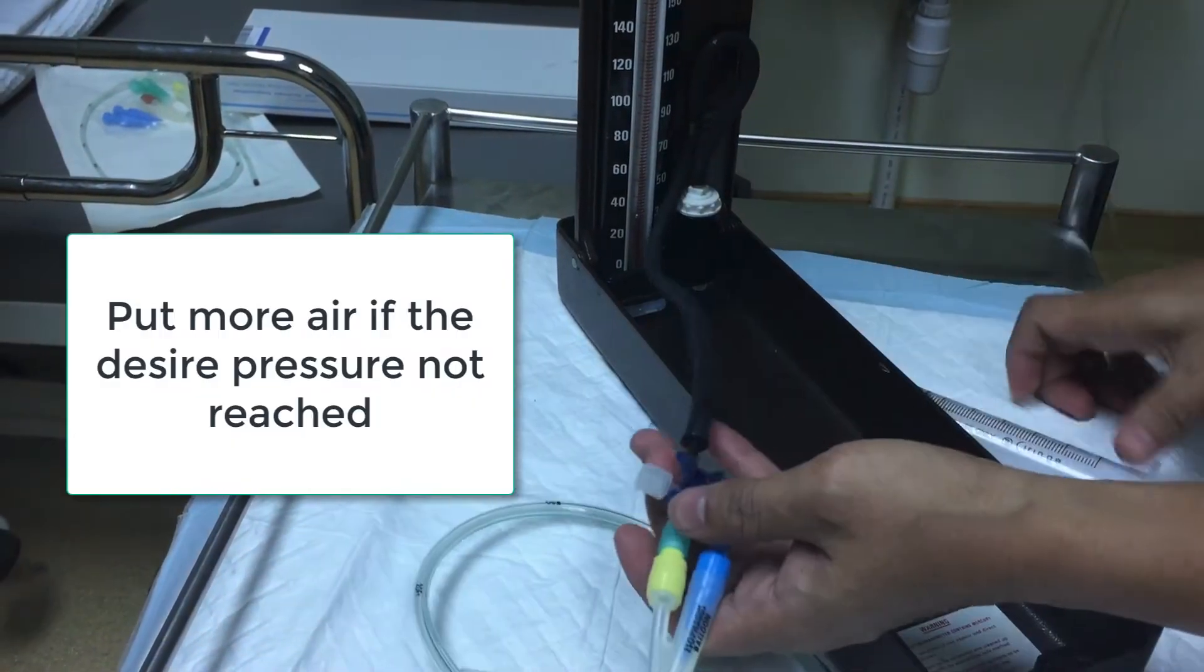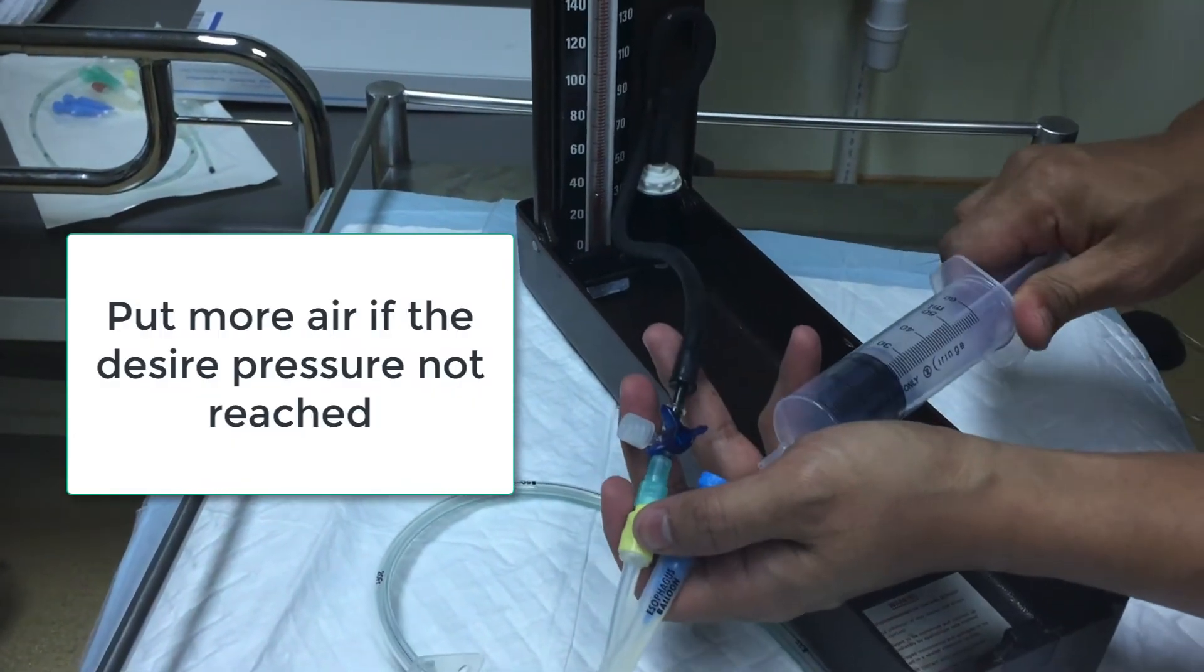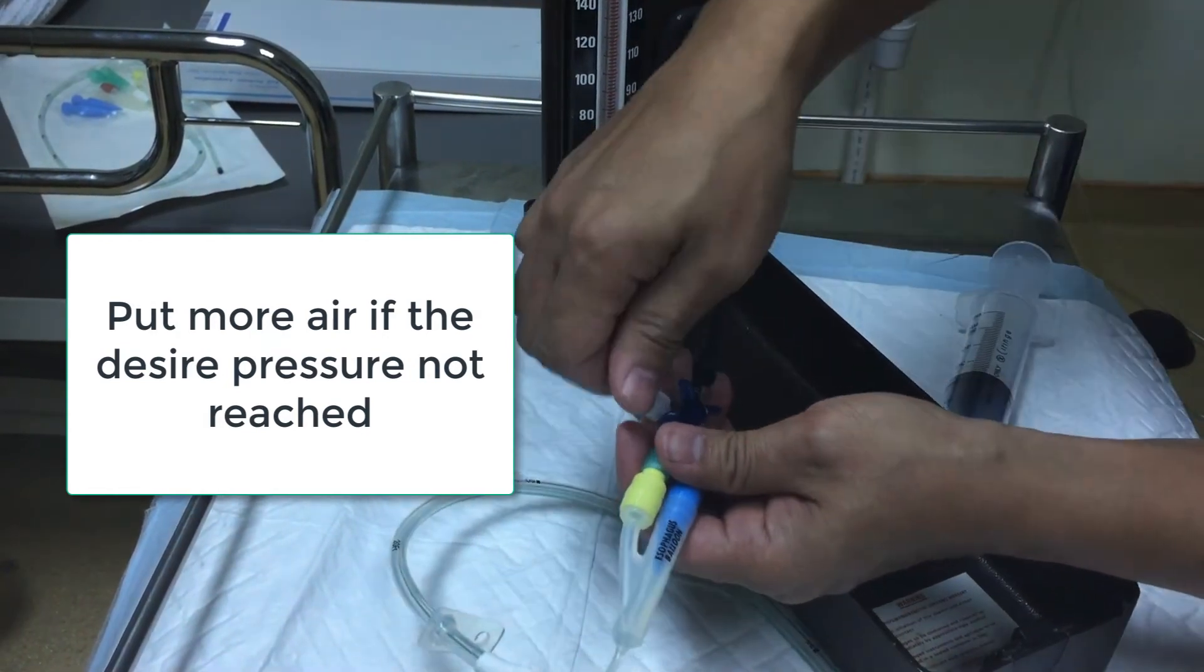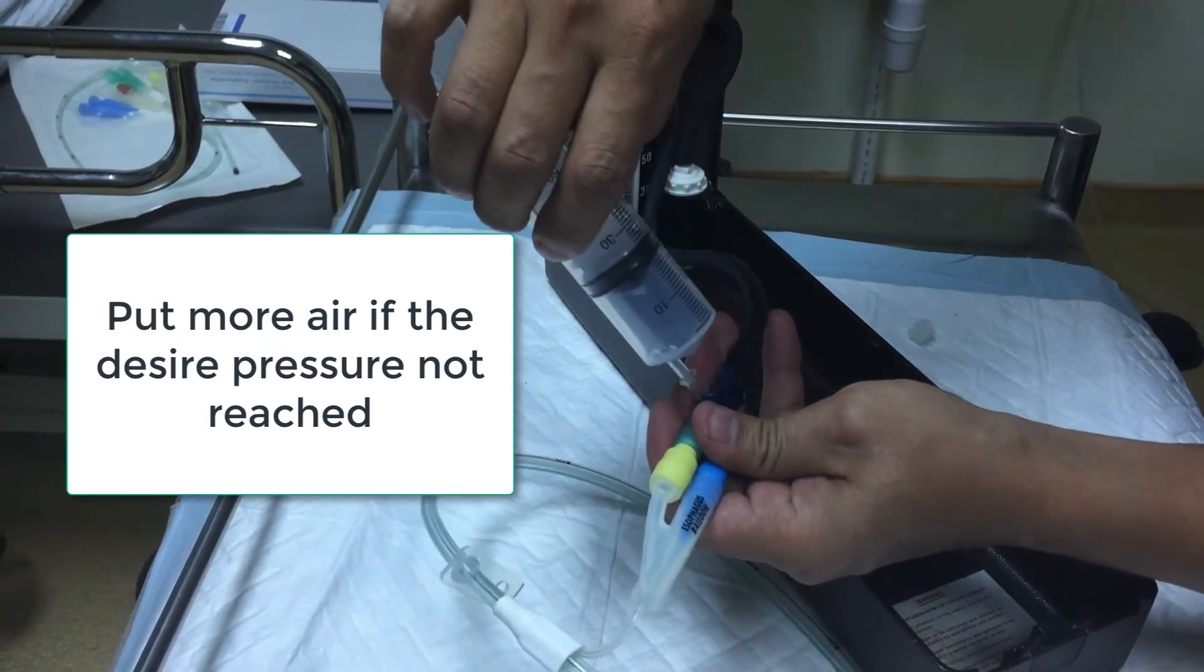If the mercury level is not to the required pressure, you can put more air into the esophageal balloon.